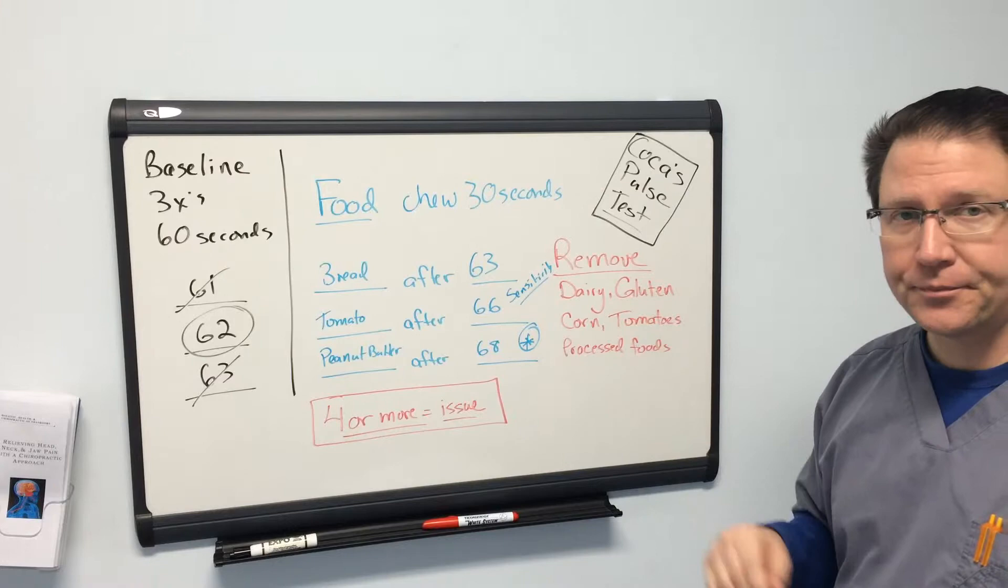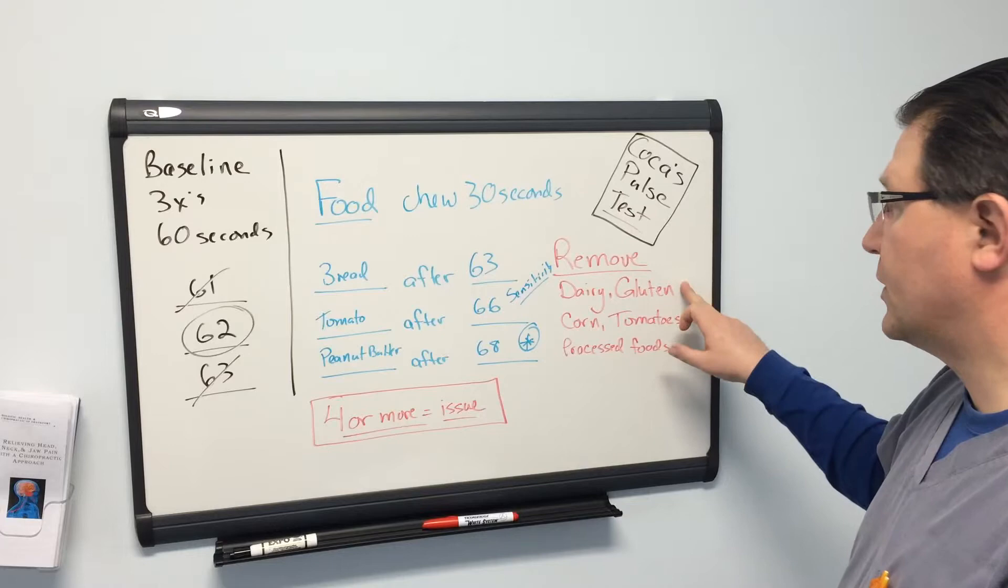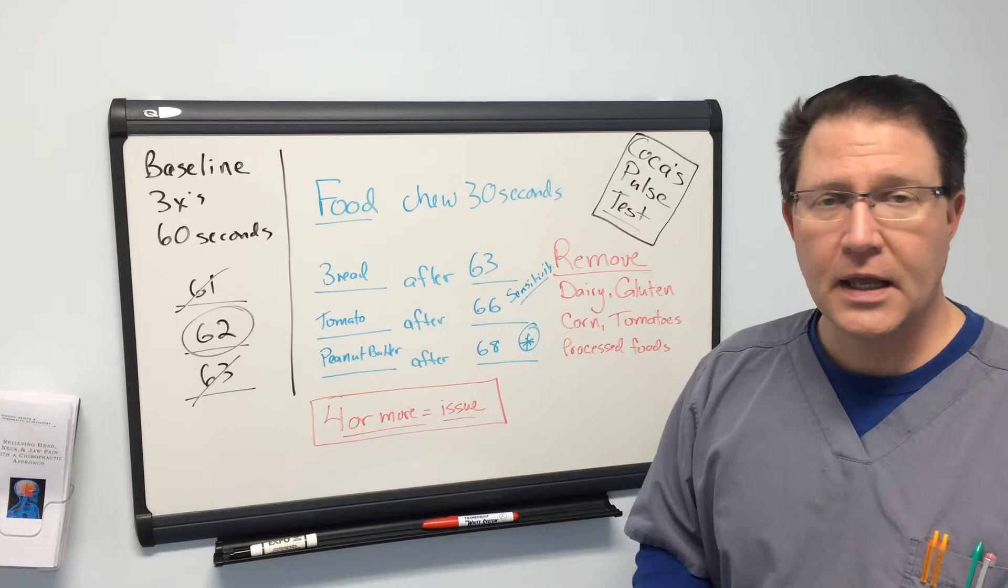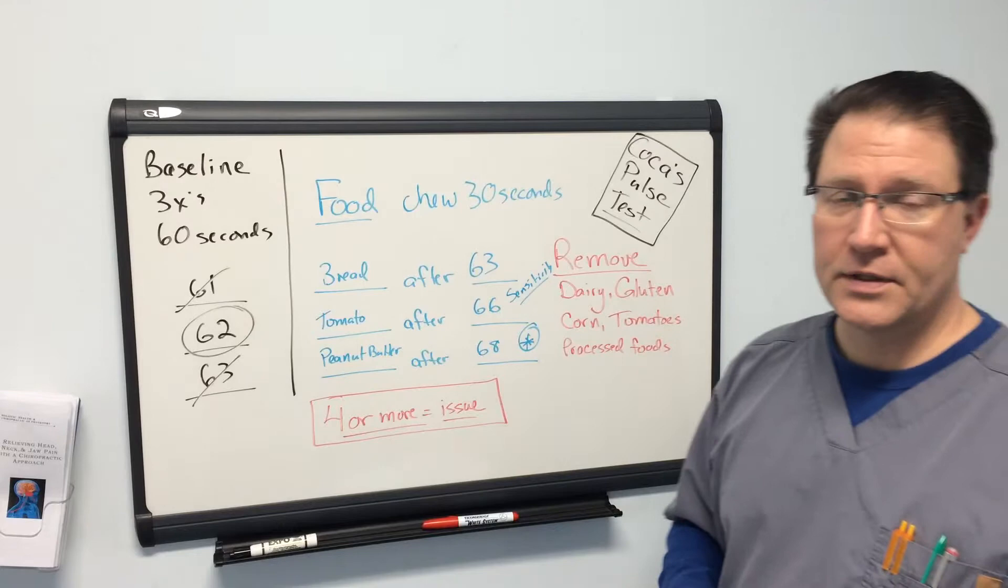The usual bad guys are dairy. I know everybody loves cheese, but test it. See how your score is with cheese. Remove dairy, remove cheese, remove milk and things like that. Gluten containing foods like wheat, rye, barley, things of that nature. Corn and every kind of corn product that's out there. High fructose corn syrup and things like that. Includes sodas, that includes drinks, that includes all sorts of processed foods.